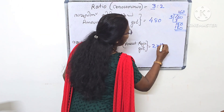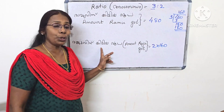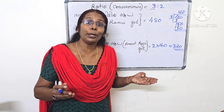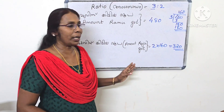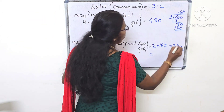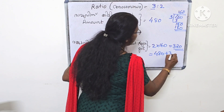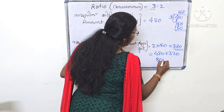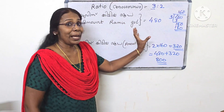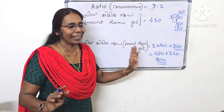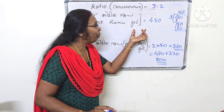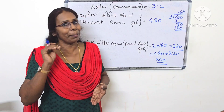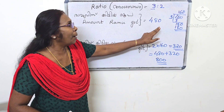Since 1 part equals 160, Raju's share equals 2 parts, which is 2 times 160 equals 320 rupees. The total sum divided is 3 plus 2 equals 5 parts, so 5 times 160 equals 800 rupees total.